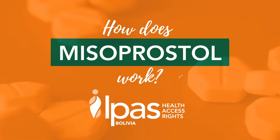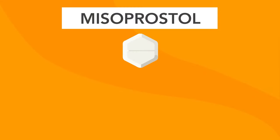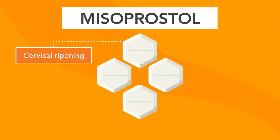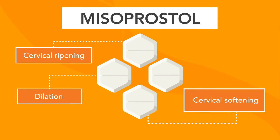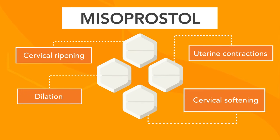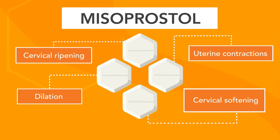How does Misoprostol work? Misoprostol causes cervical ripening, dilation, cervical softening, and uterine contractions.